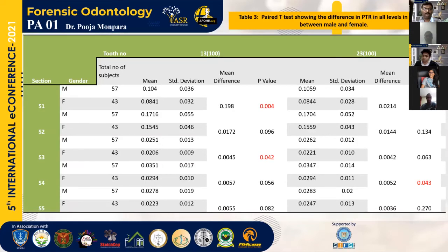In Table 3, the same observations were made for the canine. In the S4 section, a significant difference between male and female was found. In S3, we also found significant difference between male and female in the PTR value. In the left canine, we found significant difference in S1 and S4.